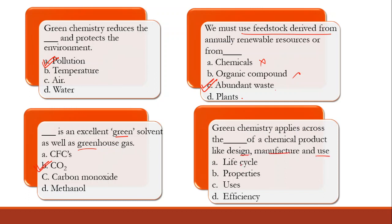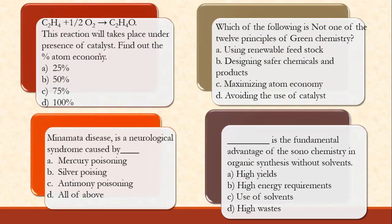Green chemistry applies across the life cycle of a chemical product — design, manufacture, and use. This is not just about a property or efficiency — it's a cradle-to-grave or cradle-to-cradle approach. From inception to end, you have to apply green chemistry principles.